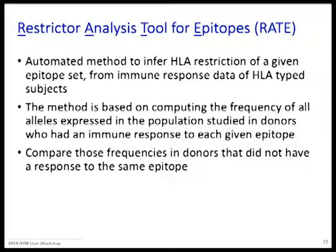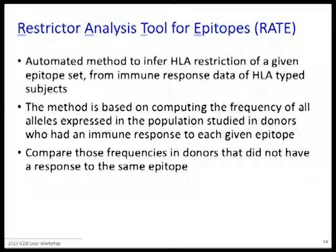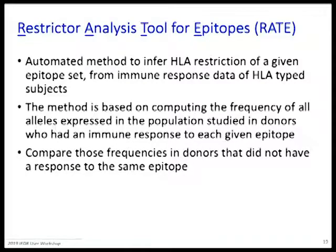The next tool is RATE. This tool aims to infer or determine HLA restriction. This is not an unequivocal assignment, at least with the size of datasets usually tested in immunological experiments, but it's meant as a way to narrow down the potential restrictions and then do experiments with single HLA transfected cell lines or what have you. The logic of this tool is simple.